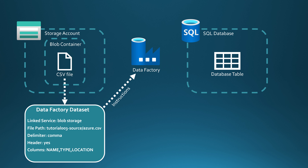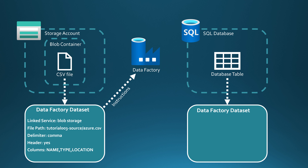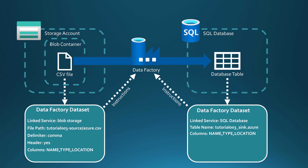Next, we have to describe the database table for Data Factory, so we will also create a dataset for that table. We need to describe the linked service — now it's going to be SQL database. Then we have to tell the table name, and after we have given the table name, Data Factory can read the columns from the actual table. Then we can use these as instructions for Data Factory to write that data to the database. After we have done all this, we can just configure the copy activity and let Data Factory handle the copy. Now we have covered in theory how to copy a CSV file from Blob Storage to Azure SQL Database. Next, let's go to the Azure portal and see how we can do this in practice.